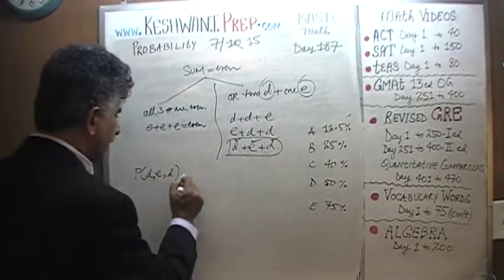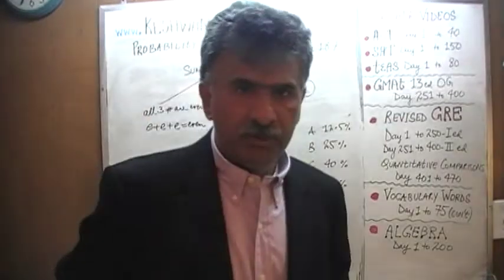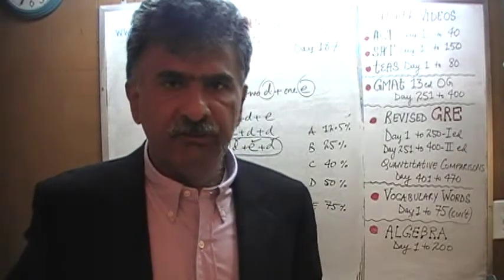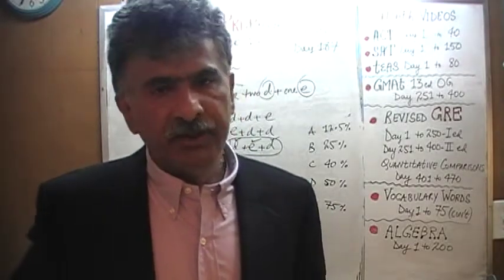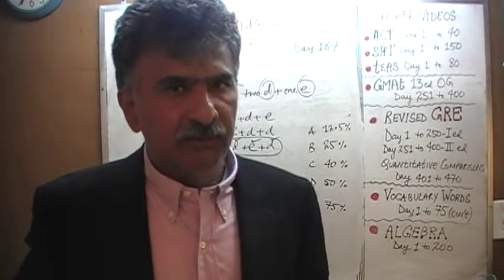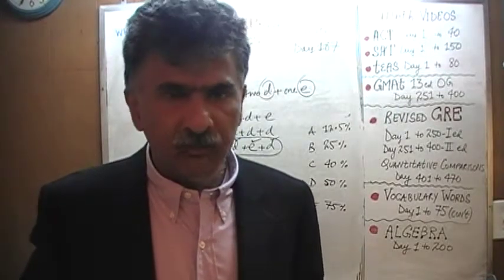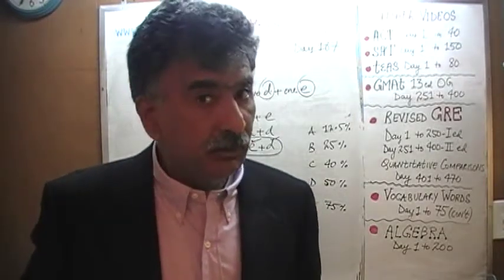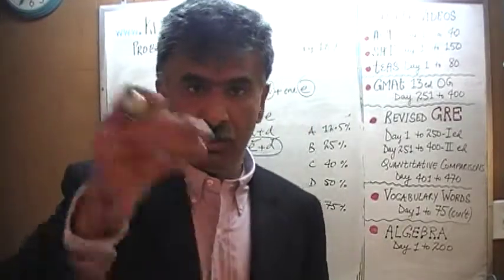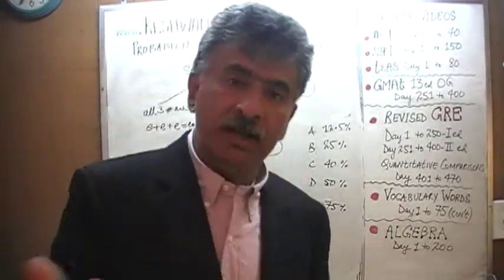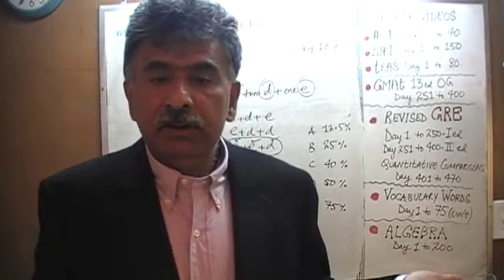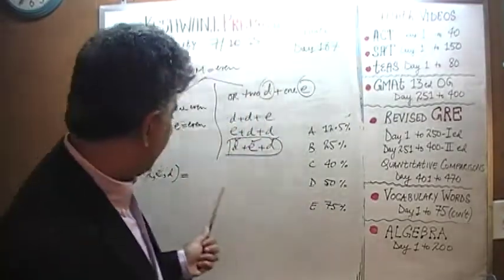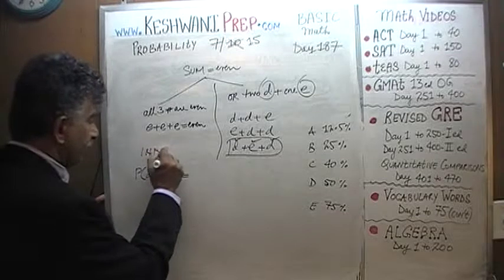What are the odds of that sequence? Before we can answer that, we have to understand that these are independent events. The odds of picking a given number in a given draw has absolutely nothing to do with what happened in the previous draw or what is going to happen in the next draw — because we are putting the ball back in the bag each time, so there are always 80 balls. Therefore these events are called independent.